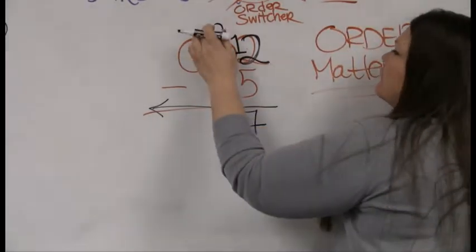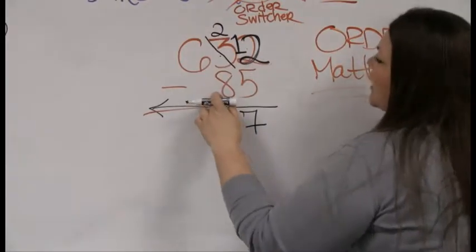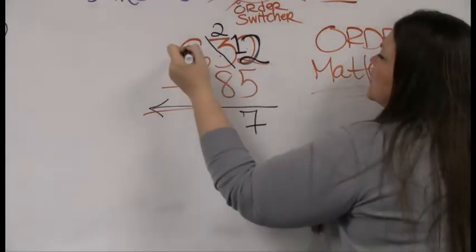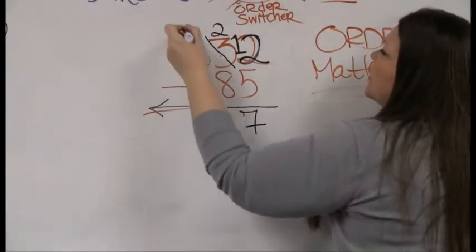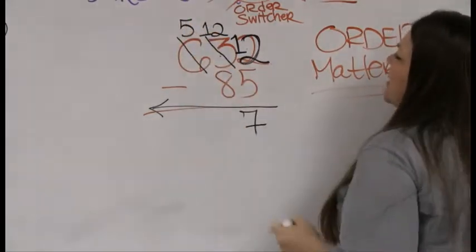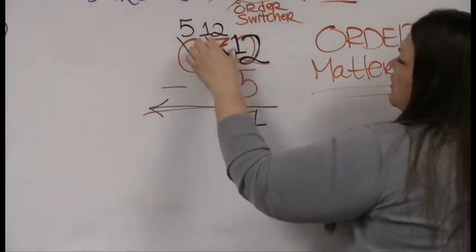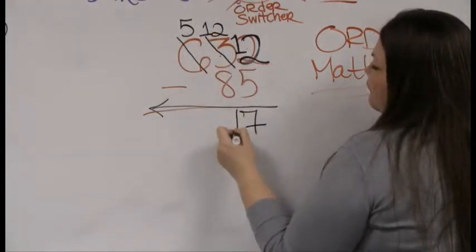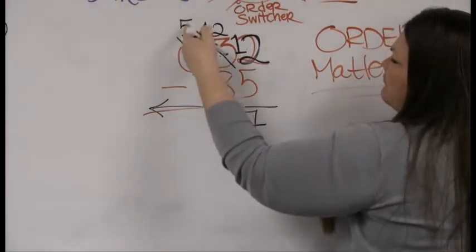Now once again I'm faced with a dilemma. I've only got 2 and I'd like to take away 8. I'm gonna have to borrow again. Knock knock, come knocking on your neighbor's door. He goes down by 1 and you go up by 10, so we have a 12 again. 12 take away 8 is 4, and 5 take away nothing is just 5.